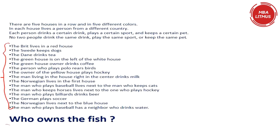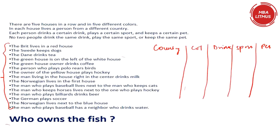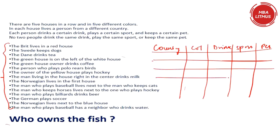A typical analytical puzzle — let's see how we go about it. So there are five houses in a row and in five different colors. In each house lives a person from a different country. Each person drinks a certain drink, plays a certain sport and keeps a certain pet. No two people can drink the same drink, play the same sport or keep the same pet. So there are several variables; we will need to create a table with these variables or columns: country, colour of the house, drink, sport and pet. We created five rows for the five people.